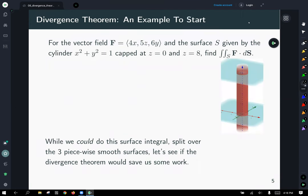So we're going to just start off with an example, just recklessly plowing forward. For the vector field, F is given by 4X in the X component function, 5Z in the Y component function, and 6Y in the Z component function. And our surface is given by the cylinder X squared plus Y squared equals one that's been capped at Z equals zero and Z equals eight planes, and we're asked to find the surface integral of this vector field. We probably could do this surface integral. Surface integrals are piecewise additive, so we could set it up over the three smooth surfaces of the exterior of our cylinder, and then the cap with each of those Z planes. But let's see if the divergence theorem would be easier, because that seems like a whole lot of work.